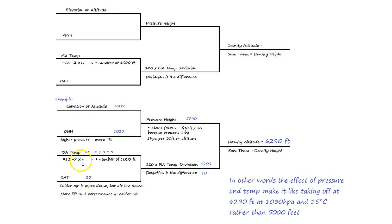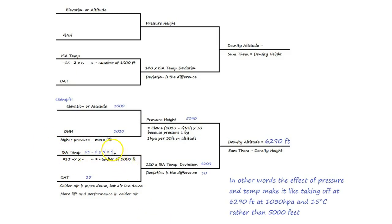So the way we work that out is with two simple formulas. You need to memorize this formula: 15 minus 2 times N. What is N? N is the number of thousands of feet. In this case here we're dealing with 5,000 feet, so N is 5. We get 15 minus 2 times 5 - 2 times 5 is 10, 15 minus 10 equals 5. It's that simple - just a matter of committing that to memory. That gives us our standard temperature. Then what we want to do is look at our outside temperature for today and compare it to what the standard temperature should be. All we do is find the difference between those two numbers - so the difference between 5 and 15 is 10.